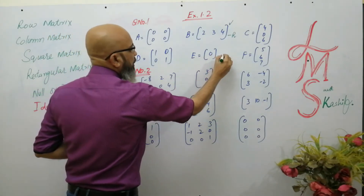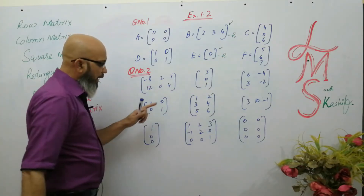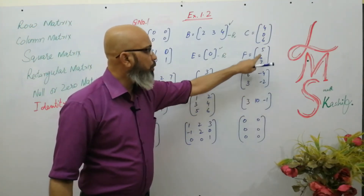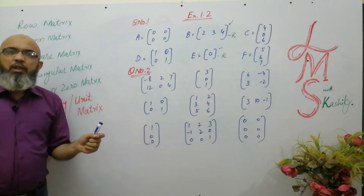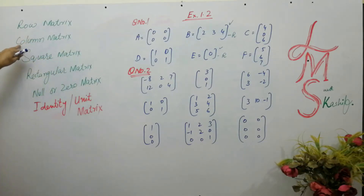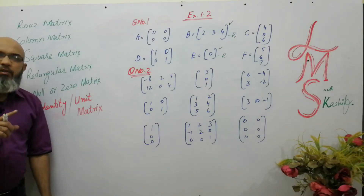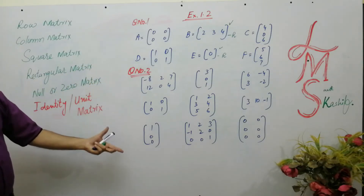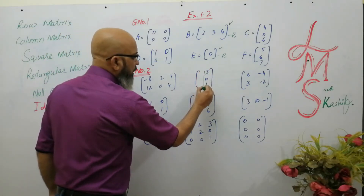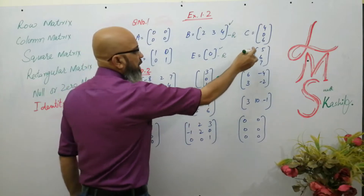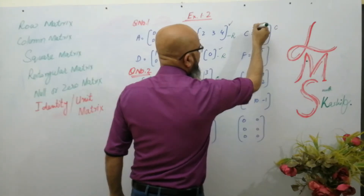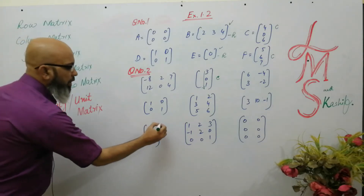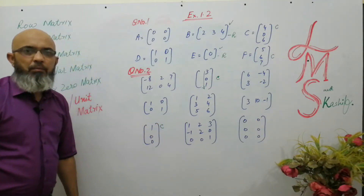This matrix is a row matrix because it has only one row. This matrix is also a row matrix because it has only one row. Other matrices have two rows, three rows — so they are not row matrices. A row matrix is one which has only one row. Similarly, a column matrix means a matrix which has only one column. Looking at these matrices: this matrix has only one column — it is a column matrix. This matrix has only one column — also a column matrix. This matrix has only one column — also a column matrix.